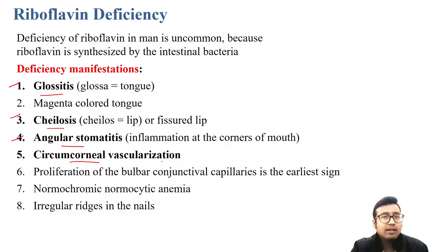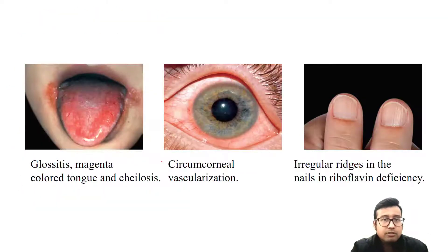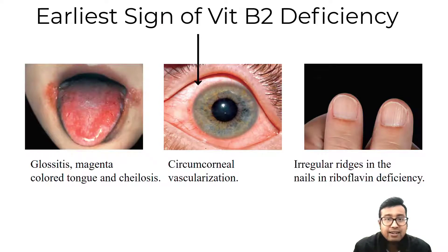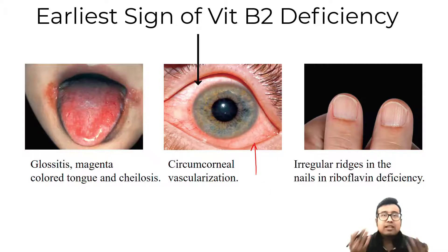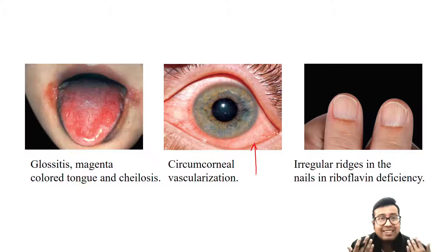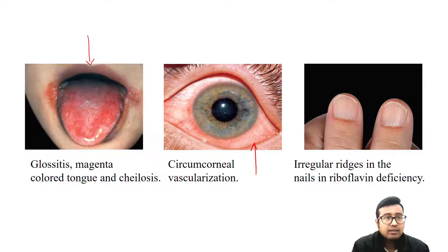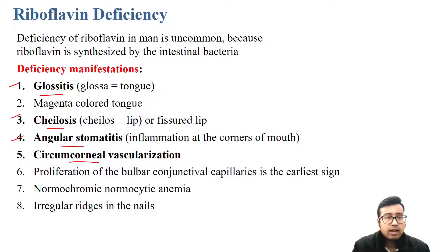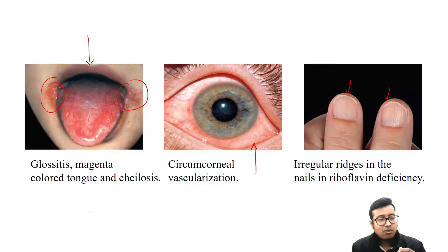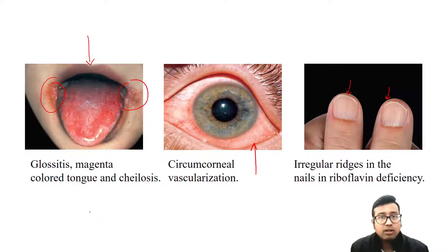You must remember the highlighted ones. Circumcorneal vascularization — redness around the cornea, the whole eye becomes red, as if you splashed cold water in your eye. This is a beefy red tongue, glossitis. These are angular stomatitis. Also, irregular ridges in nails — ridges are normal, but irregular ridges are a sign of riboflavin deficiency.